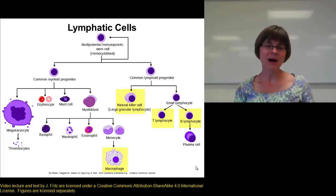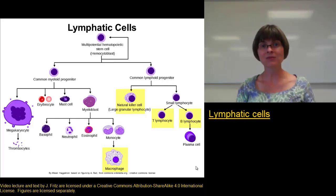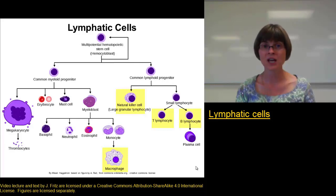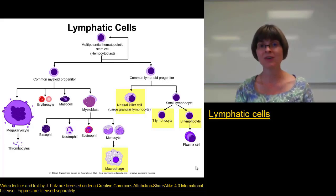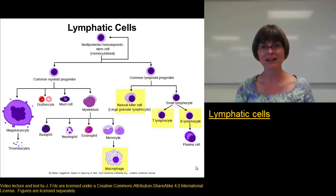Now that we've talked about the lymph and the lymph vessels, we should talk about the lymphatic cells. There are a number of lymphatic cells found throughout the lymphatic system that are really important for cleaning up the things being brought into the lymph and for activating the immune system. They're highlighted on this slide, and I want to briefly talk about some of the main types of lymphatic cells.